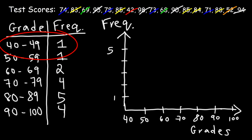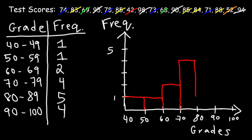Let's plot the first bar — between 40 and 50 the frequency is only 1. Between 50 and 59 the frequency is still 1. Between 60 and 69 it goes up to 2, so that bar is a little bit taller. From 70 to 79 it goes up to 4. From 80 to 89 it goes up to 5. And from 90 to 100 it's 4. That's how we construct the histogram.